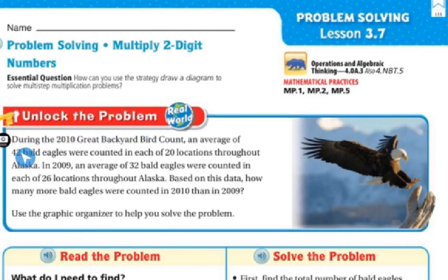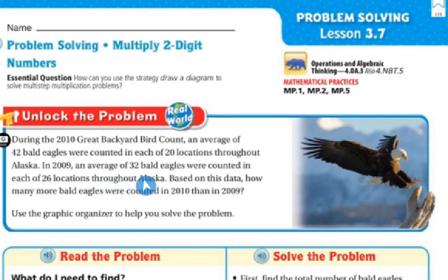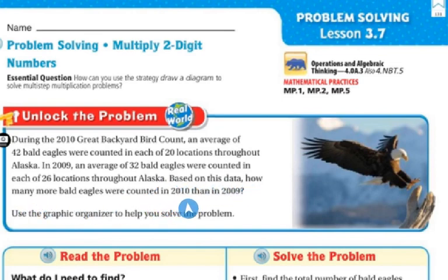Let's unlock the problem. During the 2010 Great Backyard Bird Count, an average of 42 bald eagles were counted in each of the 20 locations throughout Alaska. In 2009, an average of 32 bald eagles were counted in each of 26 locations throughout Alaska. Based on this data, how many more bald eagles were counted in 2010 than in 2009? Use the graphic organizer to help you solve the problem.